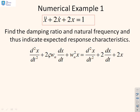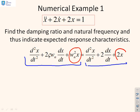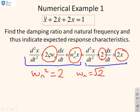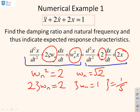A numerical example to calculate the natural frequency and damping ratio. Here's the normalized form: d²x/dt² + 2ζωₙ dx/dt + ωₙ²x. Here's the equation you've been given: d²x/dt² + 2 dx/dt + 2x. Match coefficients: ωₙ² equals 2 which tells me ωₙ equals √2. Next, match the middle two coefficients: 2ζωₙ equals 2, which gives ζωₙ equals 1, so ζ equals 1/√2.